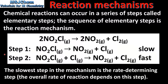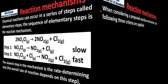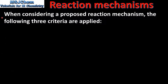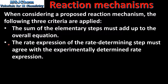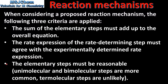It's important to note that the reaction mechanism is only a theory of how the reaction takes place. Therefore we can never prove that the reaction mechanism represents the actual chemical change taking place. Next we look at the three criteria that need to be applied when considering a reaction mechanism. The first is that the sum of the elementary steps must add up to the overall equation. The second is that the rate expression of the rate-determining step must agree with the experimentally determined rate expression. And the third is that the elementary steps must be reasonable — unimolecular and bimolecular steps are more common, whereas termolecular steps are unlikely.